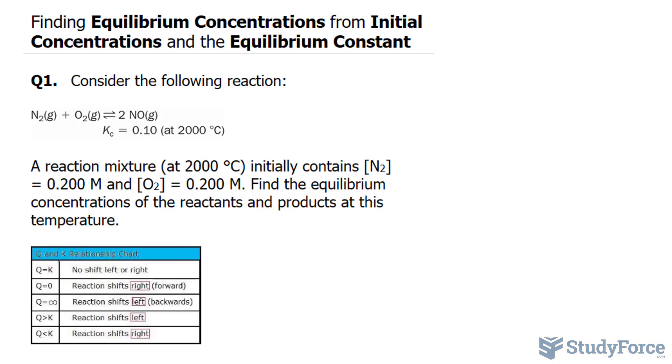The first step is to use the balanced chemical equation that's already provided to prepare an ICE table, which tells us the initial, change, and equilibrium concentrations. This will help us organize our work. An ICE table consists of three rows: I for initial, C for change, and E for equilibrium. We'll write down N2 plus O2 yields two molecules of NO. Now we've been given 0.200 and 0.200 molars of the reactants, and we can assume that there is no product made, so its initial concentration is zero.